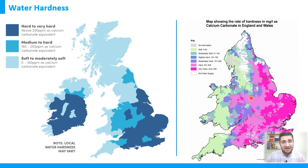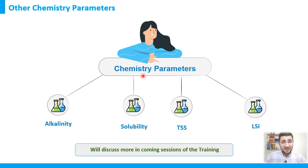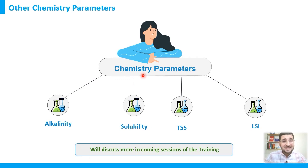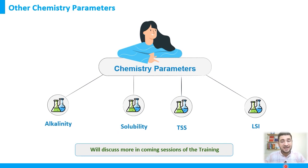Hardness is a key factor for all water systems, from drinking water to wastewater and recycled water. In coming sessions, we will discuss other important water chemistry parameters including alkalinity, salt solubility, TSS (total suspended solids), and LSI (Langelier Saturation Index).